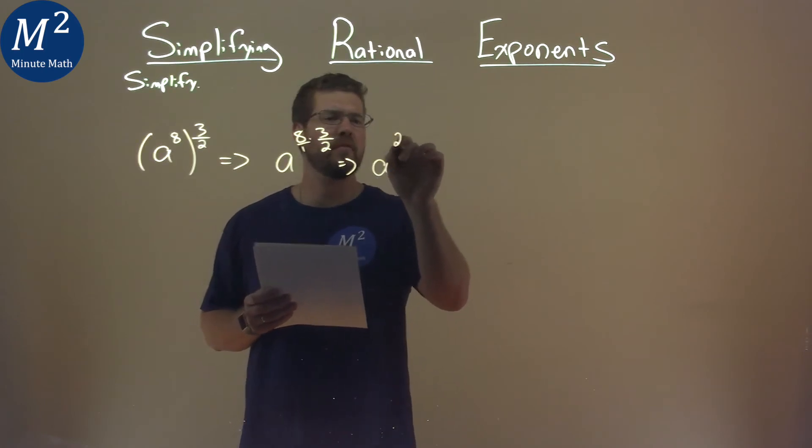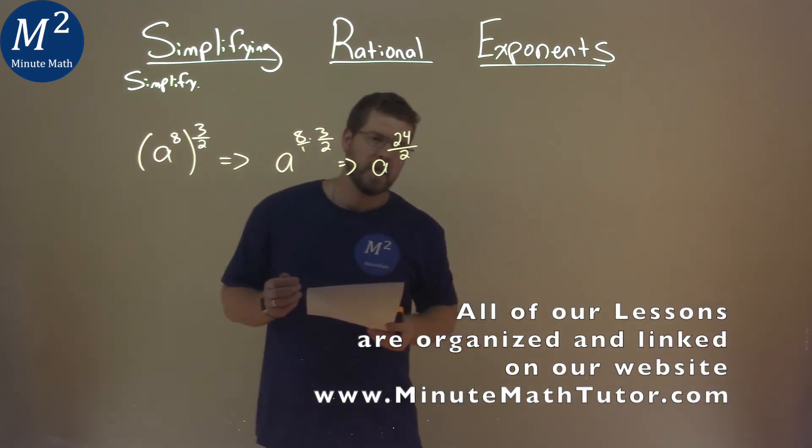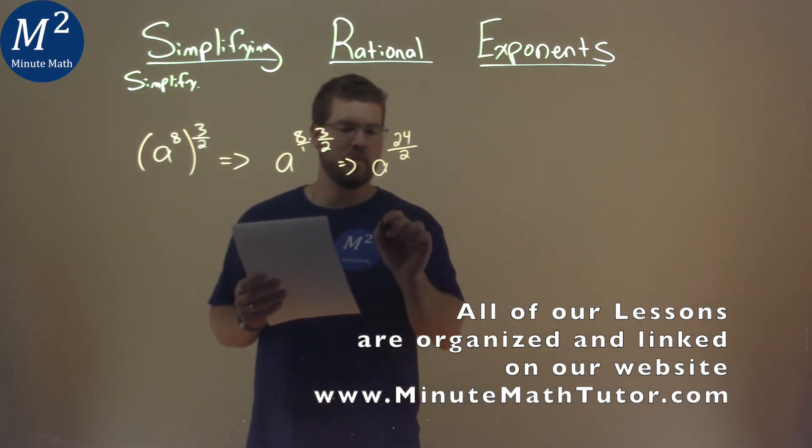So we have A to the twenty-fourth power over two. Now, twenty-four divided by two isn't too bad. Let's go and move down here.